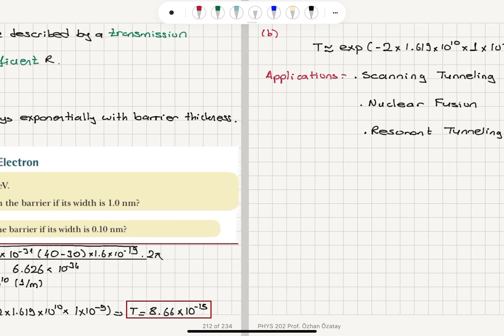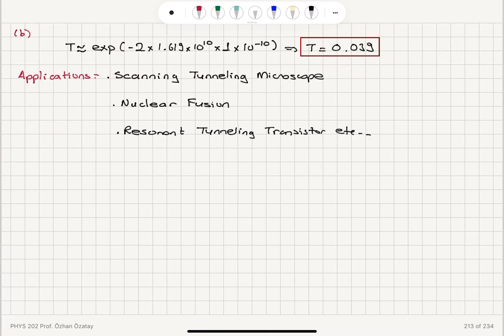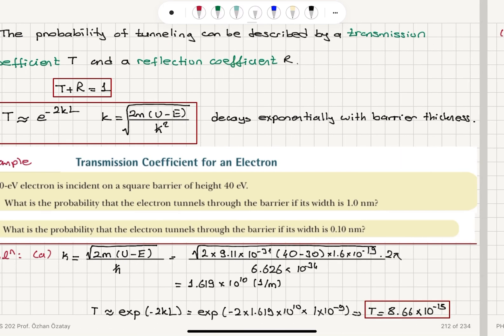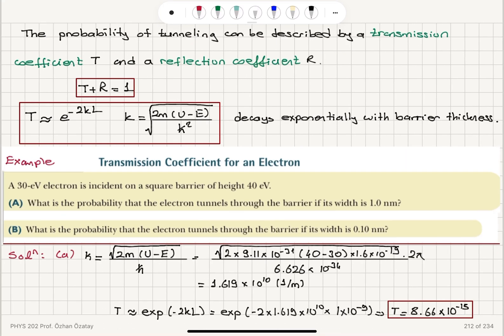Some applications of this tunneling process include the scanning tunneling microscope, nuclear fusion, and the resonant tunneling transistor. It also finds applications in other electronic devices.